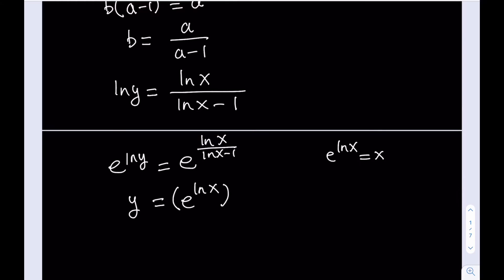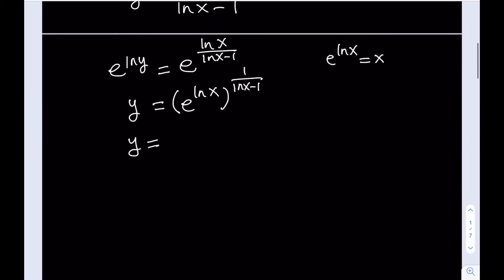e to the power ln(x) to the power 1 over (ln(x) minus 1). And then I'm going to replace e to the power ln(x) with x. And that's going to give me y in terms of x in the simplest form. And that's going to be our answer.